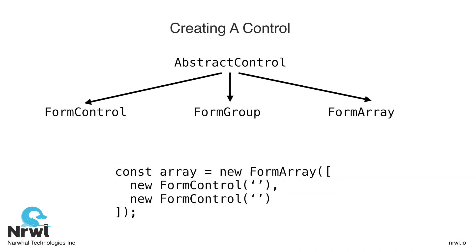Finally, here's the syntax for creating a new form array. We simply pass in an array of abstract controls, and these are form controls in the pictured example, but they could be other form arrays or form groups potentially.